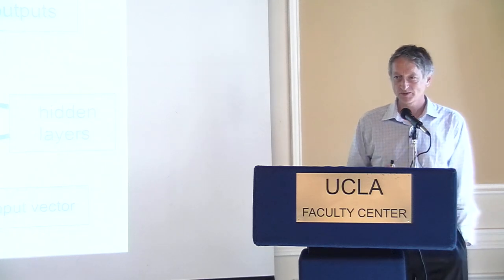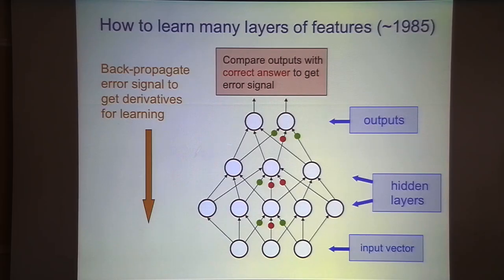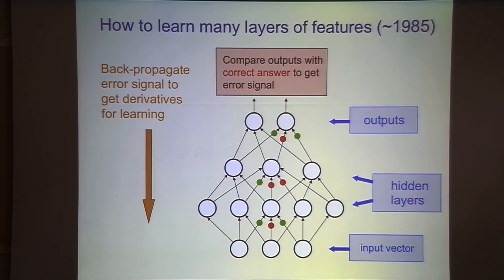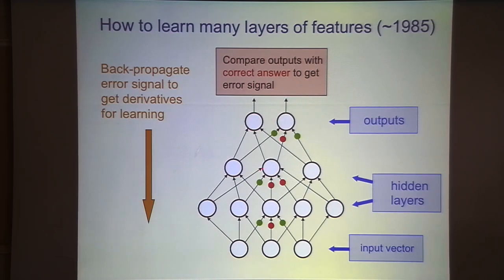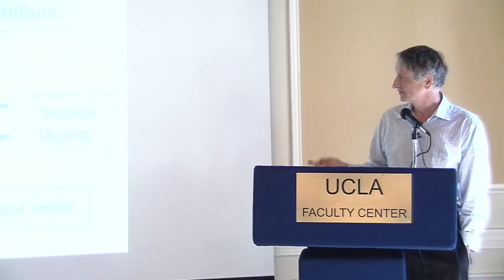In case anyone doesn't know what backpropagation is: you have inputs, multiple layers of non-linear neurons, and outputs. You put an input in, run forward through the net, compare with the correct answer using some measure of the difference, then use the chain rule to backpropagate derivatives through the network to find derivatives for all the weights. The key is that for each neuron you backpropagate the derivative of the error with respect to the neuron's activity. It's actually a very simple algorithm.